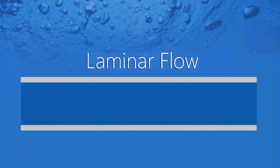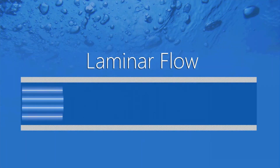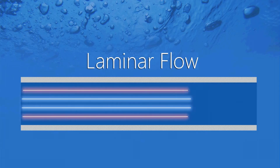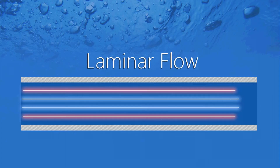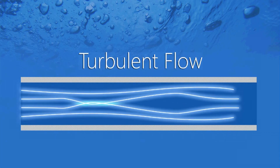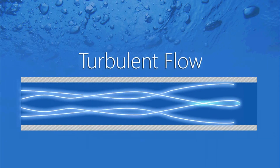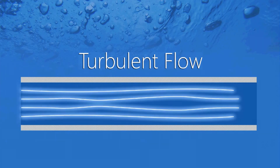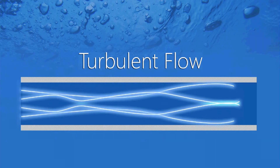If the flow is laminar, it flows in layers. And those layers can be a barrier to heat transfer between the water and the steel that surrounds it. So if it's laminar, you're again reducing the amount of heat transfer that you get out of the mold.